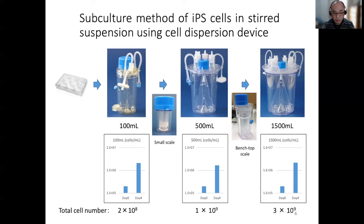In suspension culture of iPS cells, the cell dispersion device was used for passaging. Using our bioreactor, cell aggregates grown in 100 milliliters for four days were dispersed with a small-scale cell dispersion device to obtain 200 million cells. The obtained cells were inoculated into 500 milliliters, cultured for four days, and then the aggregates were dispersed with a benchtop-scale cell dispersion device to obtain 1 billion cells. The obtained cells were inoculated into 1.5 liters, and four days later, 3 billion cells were obtained.